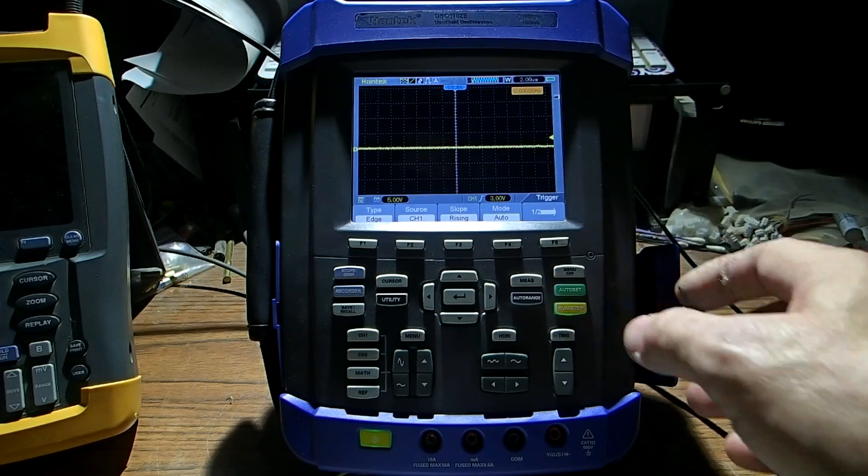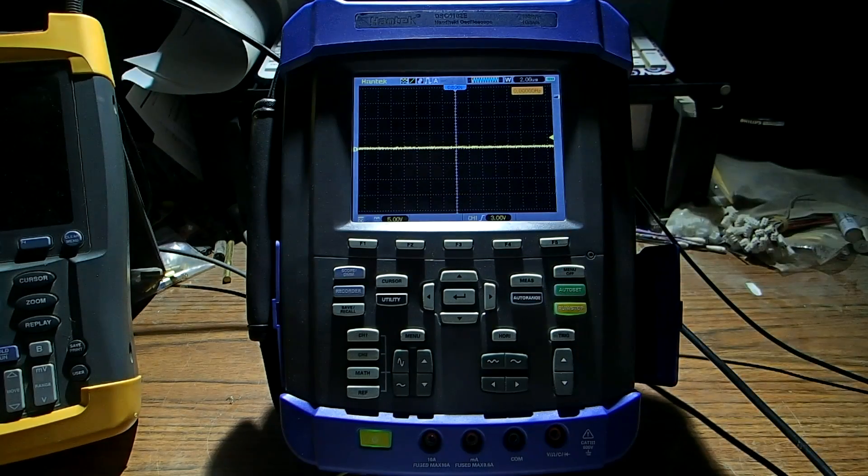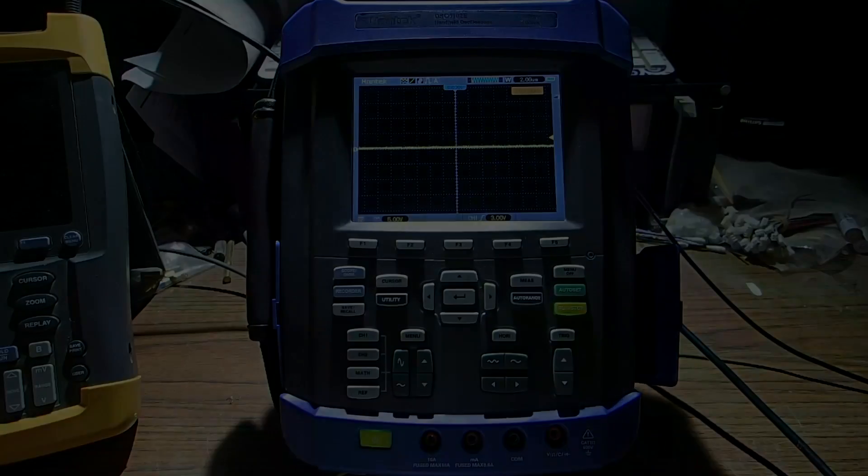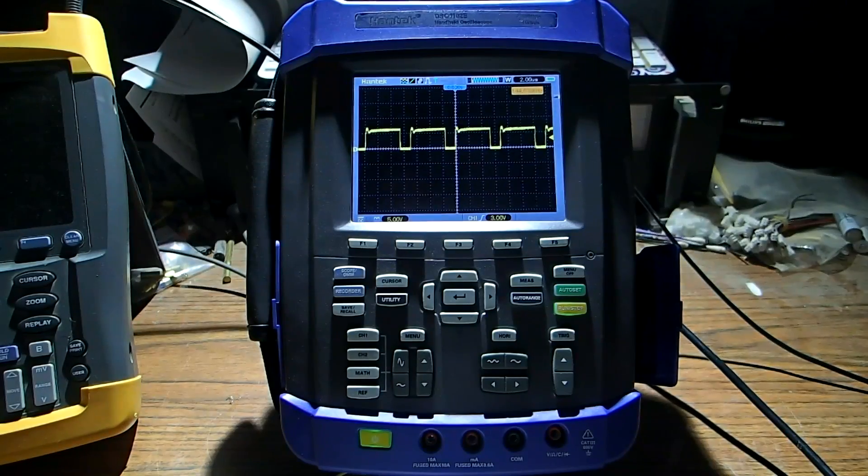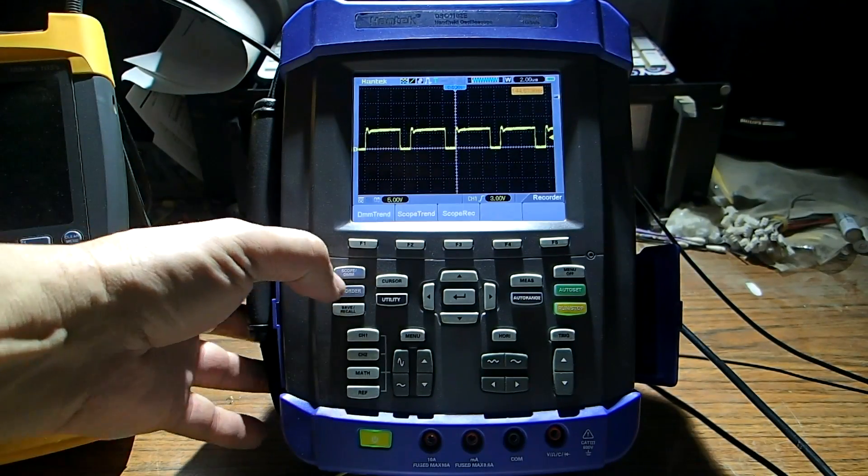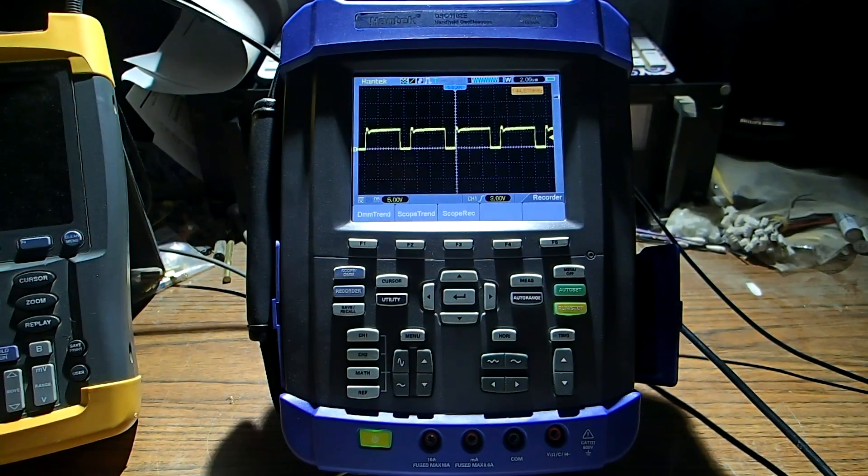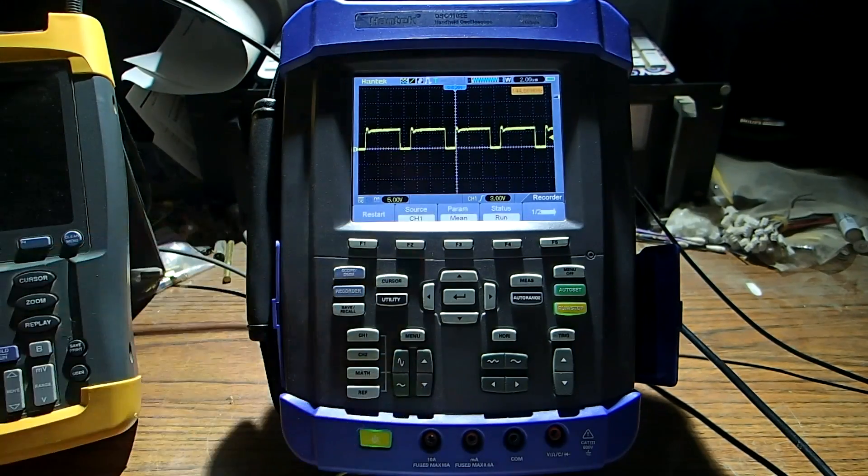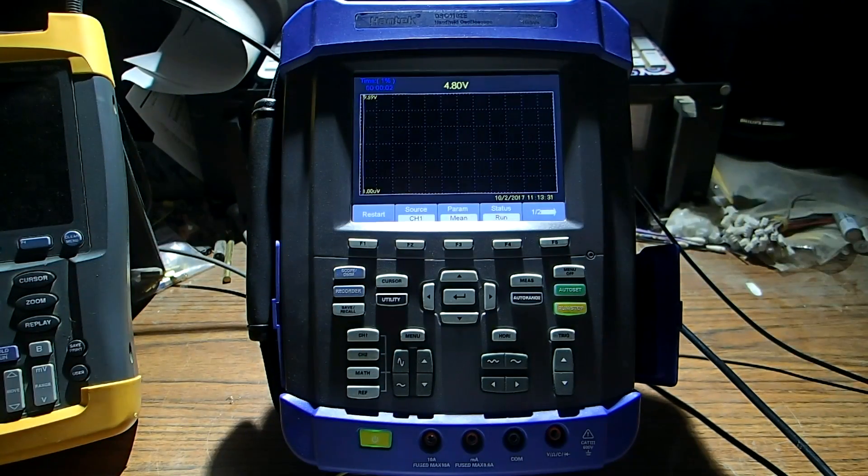In the auto mode it runs continuously. Like the Fluke scope it does have a recorder and it has three modes. So basically if you pick one it'll start recording. Basically this looks at a long event to see if there's a glitch. And so that you can tell if there's a glitch at that location in the circuit. That's pretty useful.